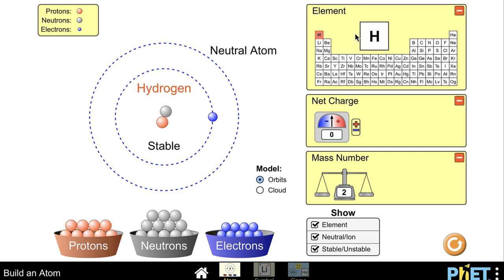Note that it's showing you what element up in the upper right here we have and we still have hydrogen and that's because there's still only one proton in the nucleus. The neutron has no charge so it did not change our net charge but it did change our mass number and our mass number is now two because we have two particles in the nucleus.